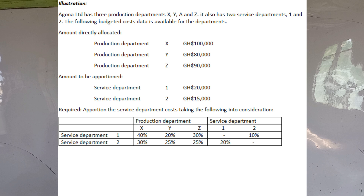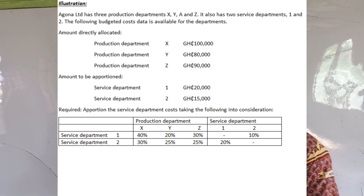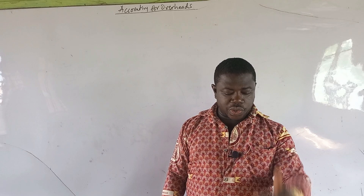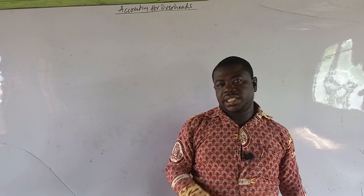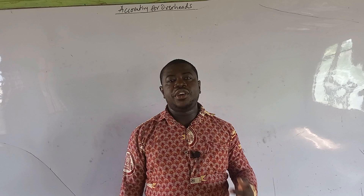Amount to be apportioned: service department one is 20,000, service department two is 15,000. The question has already given you the totals for the three production departments and the two service departments, and then they give you a table for reapportionment. The question will not tell you it's a reciprocal service — you must know.